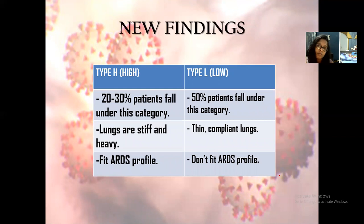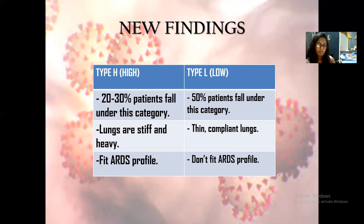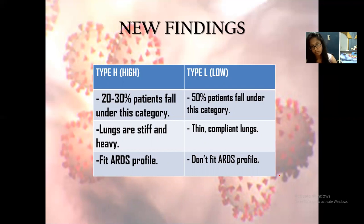A major challenge doctors face is the resourcing of ventilators and other hospital equipment. Patients have been divided into two types: H (high) and L. Type H patients are treated under acute respiratory distress protocol and have stiffer, heavier lungs that respond only to ventilators. Type L patients have thin and compliant lungs. When lungs are stiff, the patient must be put into an induced coma to allow intubation to take place.